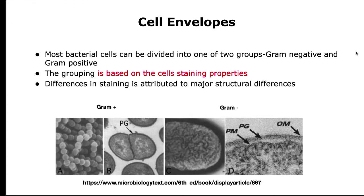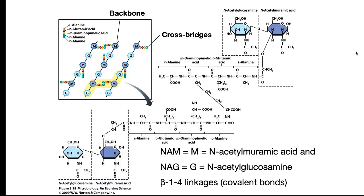We are going to spend considerable time talking about these two types because they are so common. We will begin talking about bacterial cell wall structure by describing peptidoglycan, a polymer present in both gram-positive and gram-negative bacteria. It is unique to bacteria.